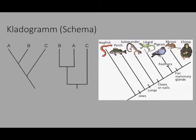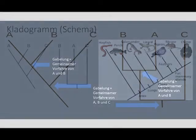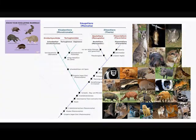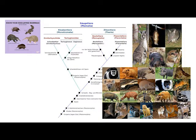Bei einem Kladogramm zeigt sich ein typisches Verzweigungsmuster. Bei einer Verzweigung gibt es immer nur zwei Äste — man spricht von dichotomer Verzweigung. Jeder Ast ist durch ein abgeleitetes apomorphes Merkmal begründet. Der Verzweigungspunkt, also die Gabelung zwischen den zwei Ästen, stellt den gemeinsamen Vorfahren dar. Am Beispiel des Kladogramms der Säugetiere: Man teilt die Säugetiere in zwei Unterklassen ein — die Kloakentiere (Monotremata), wozu zum Beispiel das Schnabeltier gehört, und die Zitzentiere (Theria), welche Beuteltiere und Plazentatiere miteinander vereinen.